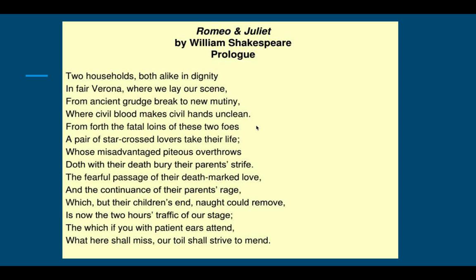Next we have the second quatrain, which gives us a bit of what happens in the play. 'From forth the fatal loins of these two foes' — foes, of course, are enemies. 'Fatal loins' has a couple of different meanings: 'fatal' in the sense of causing death, but also in the sense of fate — an outside force that determines the outcomes of events.